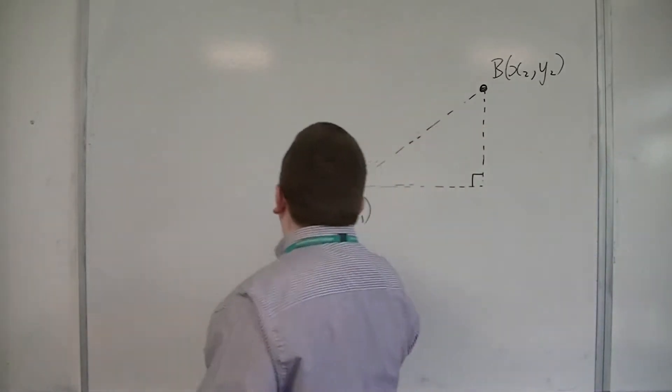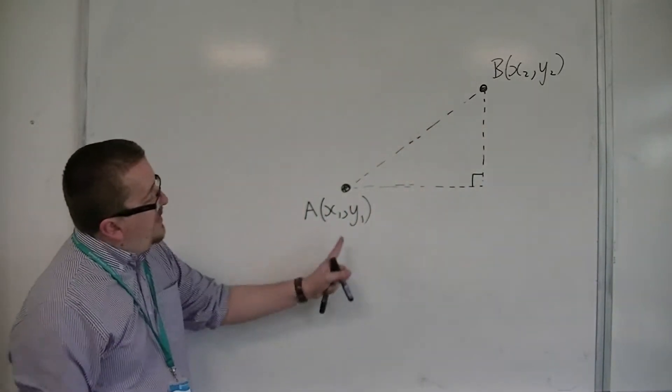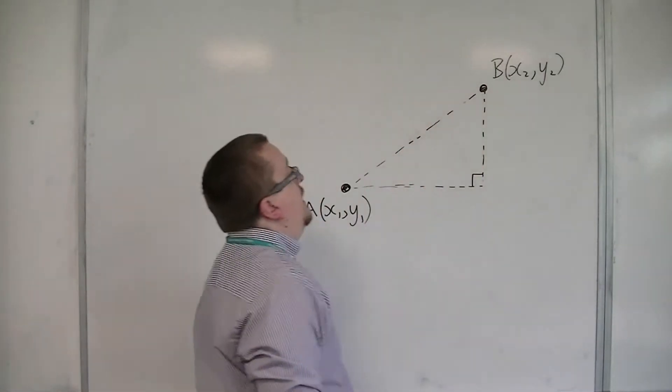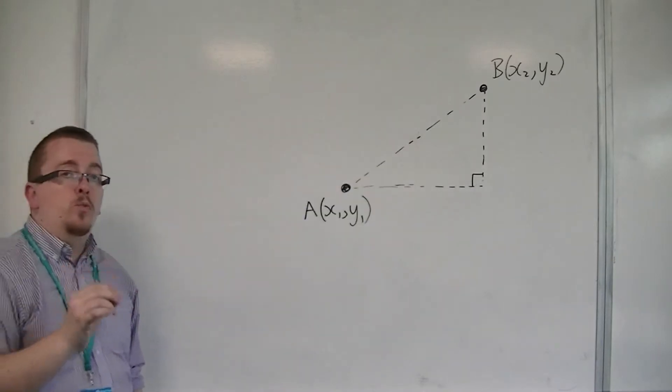So let's say we have a coordinate A, which I'm going to give the coordinates x1, y1, and a second coordinate B, which is going to have the coordinates x2, y2.